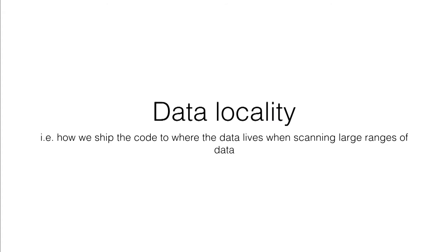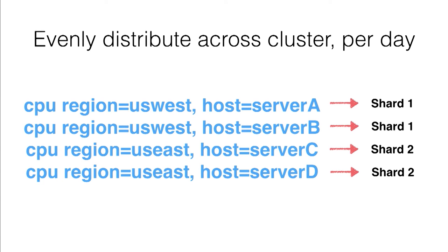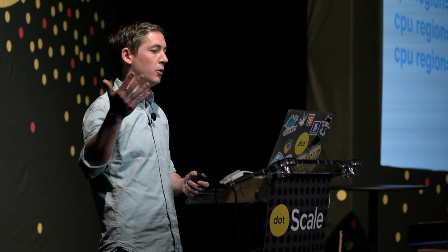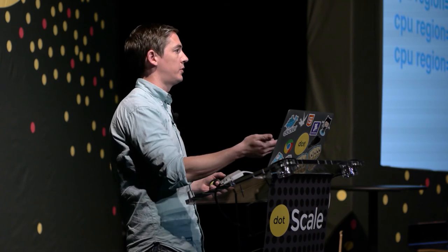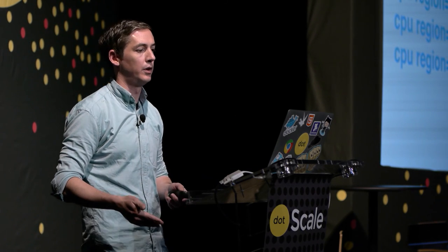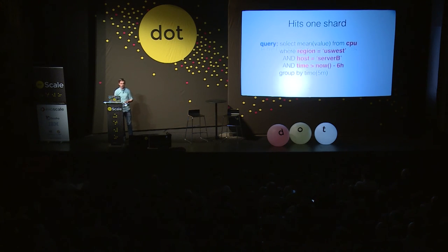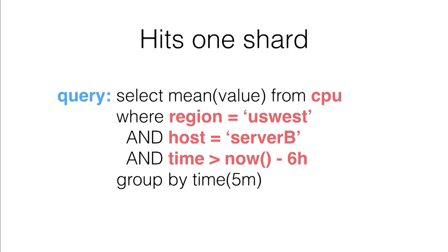The final point is data locality — how we ship the code to where the data lives, not the other way around. That's what distributed computing and MapReduce taught us. We evenly distribute data across the cluster per day. With four separate unique series, two go into one shard and two into another. Each shard lives on a server with whatever number of replicas. For a query where we know the measurement is CPU, the tag information, and the time, we can hit a single shard to answer it.